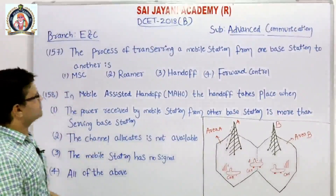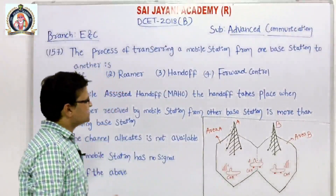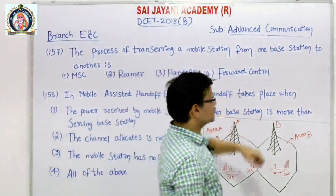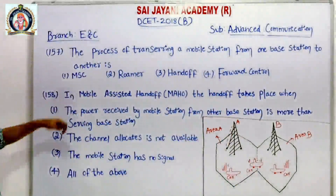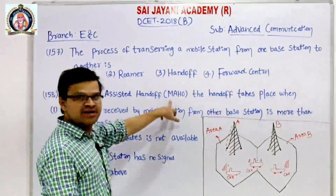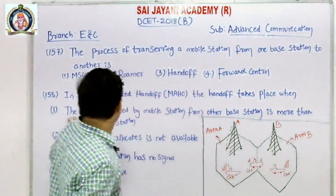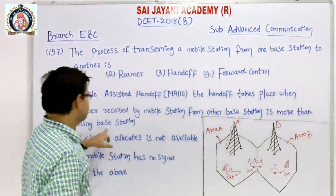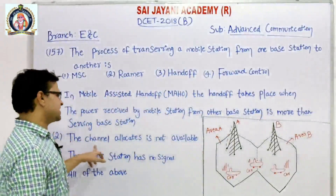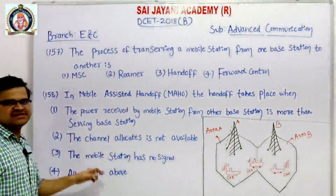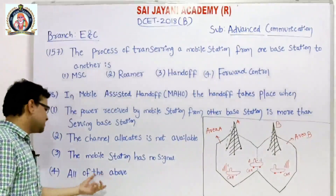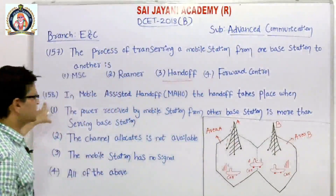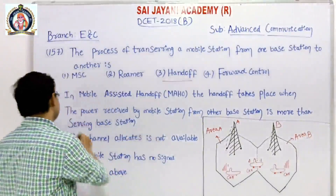Question number 157: The process of transferring a mobile station from one base station to another is — options: MSE, rumor, handoff, or forward control. Question number 158: In mobile assisted handoff (MHO), the handoff takes place when the power received by the mobile station from another base station is more than the serving base station. The answer for question 157 is handoff, and for question 158 it is the first option.